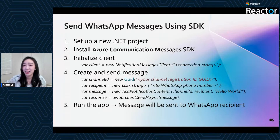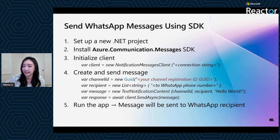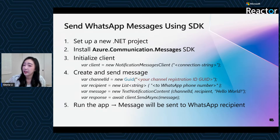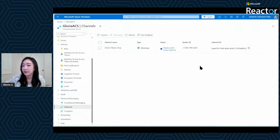Now you know how to receive messages from customers using Event Grid and process them in your backend. Let's flip perspective — how do you send messages back to your customers? This is where the SDKs come in. Azure Communication Services provides SDKs for sending WhatsApp messages in multiple languages: .NET, JavaScript, Java, and Python, so you can choose whatever best fits your tech stack. I will walk you through an example using the .NET SDK to send messages back to your customer.